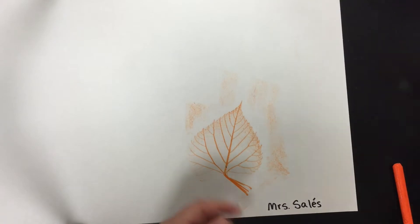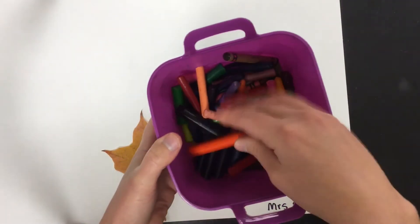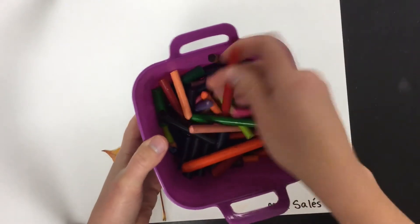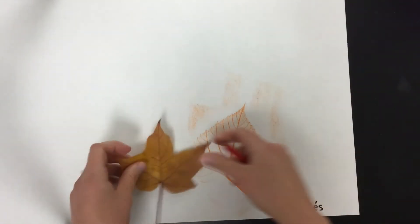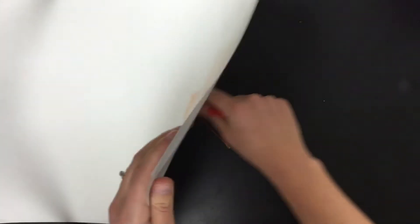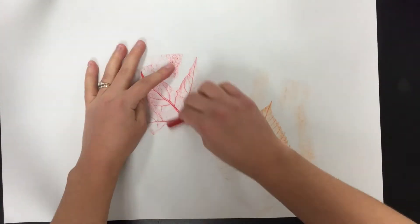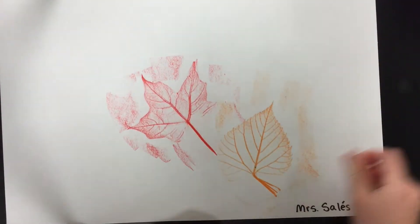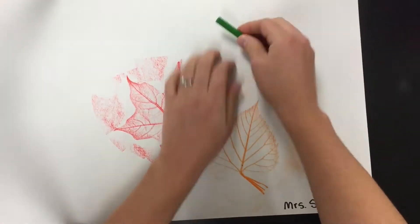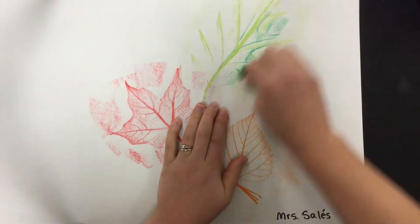When you're done with one leaf, you can put it away and pick another leaf and another crayon color. Please put your old color back before you pick a new one. What we're doing now is called a texture rubbing. So we're rubbing the crayon over the leaf to show its visual texture or the way that it feels.